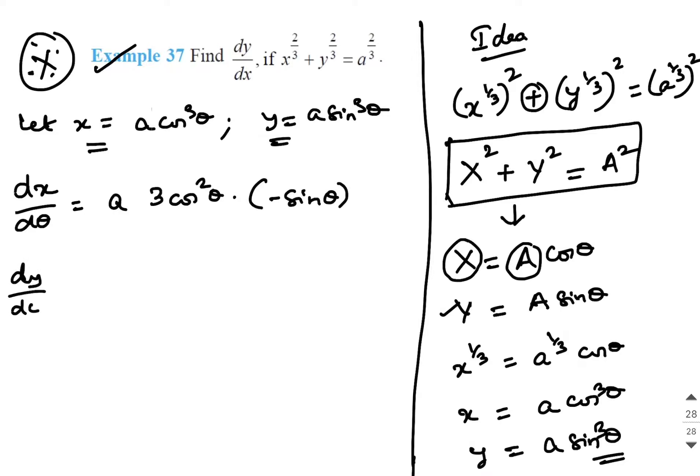Similarly, dy by d theta will be equal to A into 3 sin square theta into derivative of sin theta will be cos theta. Then what is dy by dx? dy by dx is dy by d theta divided by dx by d theta.